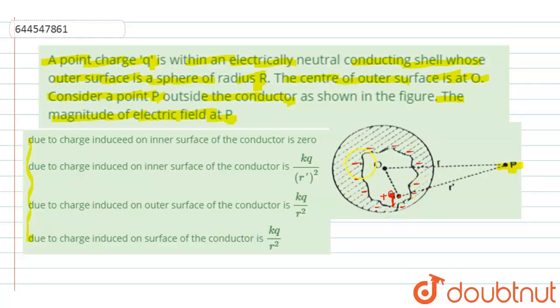So this will be minus Q and again due to the induction effect, as it is a neutral shell and it is conducting, hence on the surface of the shell, a positive Q charge will appear or will get induced we can say. So this will be plus Q charge.